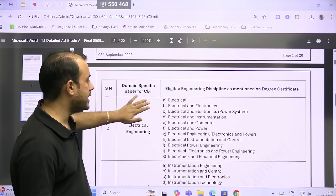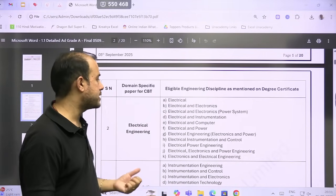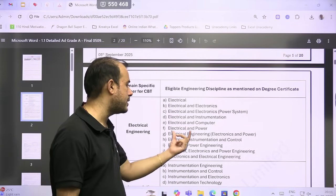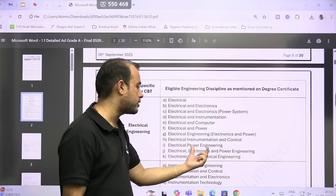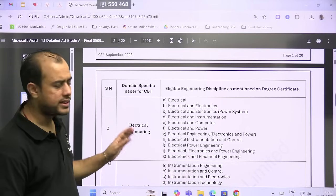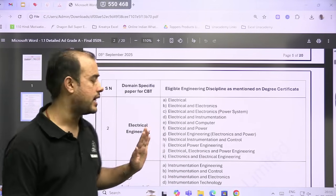Now the complete details have come out. These are the details about IOCL. They are going to recruit for Chemical, Electrical, and Instrumentation. For Chemical, the following branches are eligible. When we talk about Electrical: double E, triple E, electrical electronics power system, EI, electrical computer, electrical power, electronics power, EIC, and electronics and electrical. So basically all in all, mostly two branches—double E and triple E—are eligible.